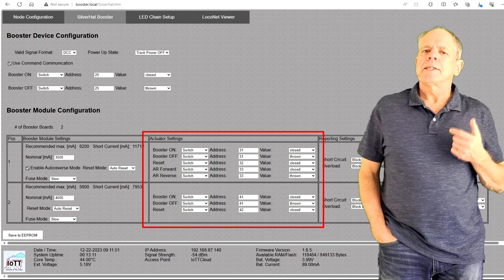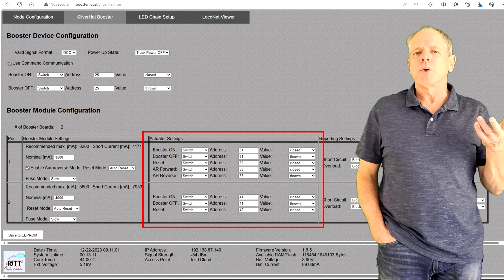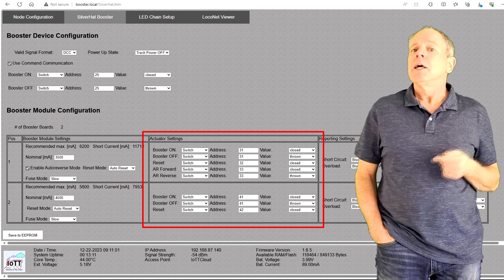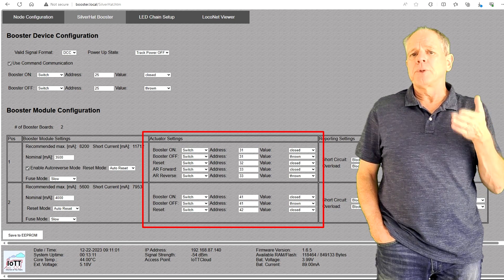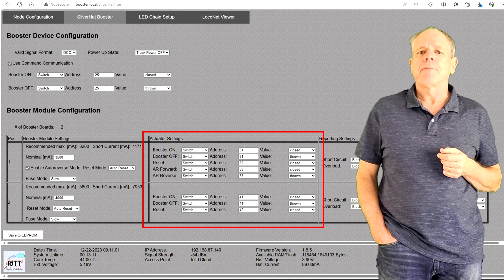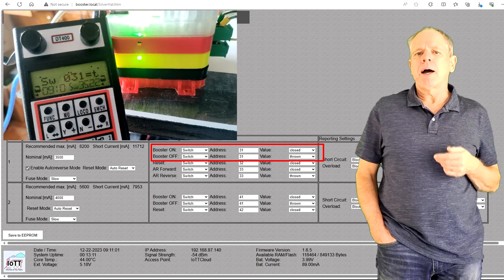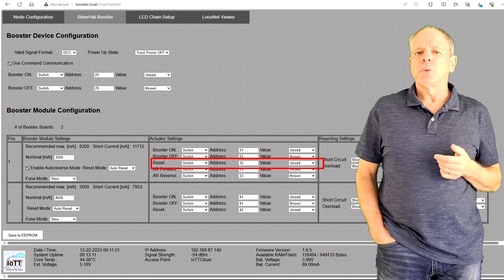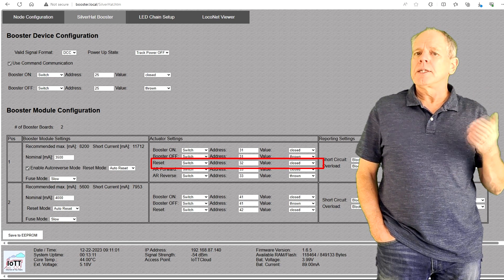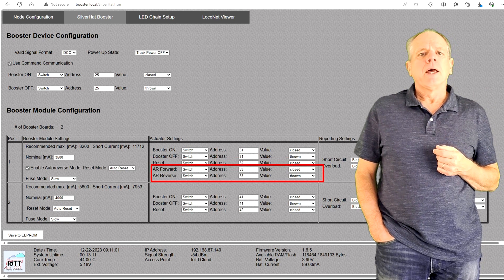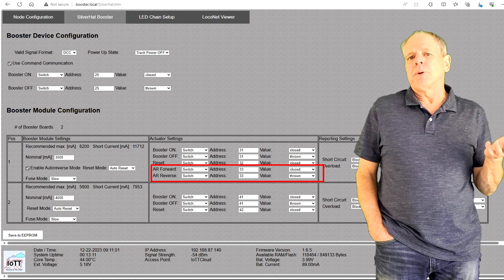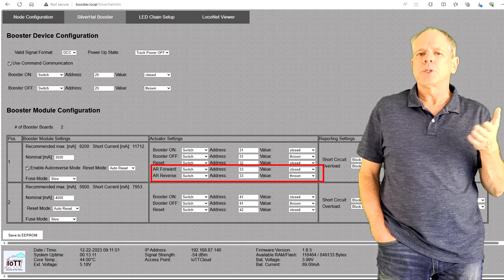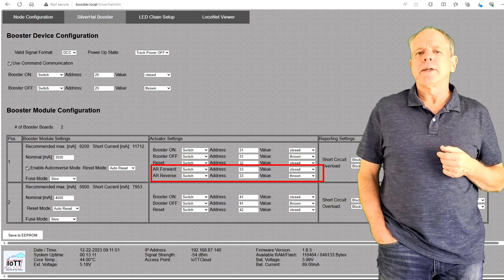In the actuator settings section, you can specify more commands to make the booster react to external inputs, but this time the settings are only valid for this particular booster channel. Again, there are commands for setting the track power on and off, then a command for resetting the booster after a short circuit if it is not set to full auto-reset. And if you have configured a polarity reversing pin, you also get command options to remotely set the booster polarity in one or the other direction.